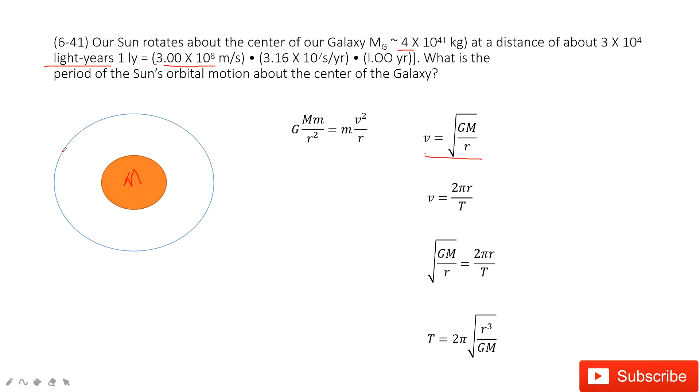So the speed for the sun, we can consider in one period. The distance it traveled is just 2πr for one circle, right? And then the time taken is one period, T. So the speed becomes 2πr divided by time T period.